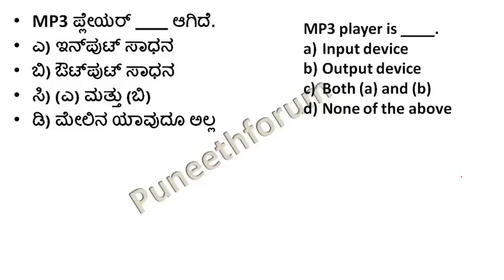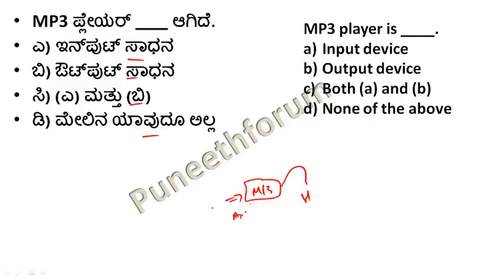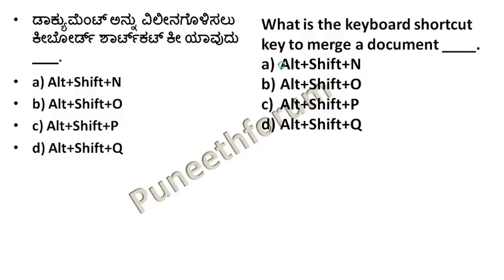Simple questions and also very important questions. MP3 player — is it an input device or output device? How do you listen to a song? You have a cassette or pen drive option, and an AUX cable option. You can use earphone or headphone. So you can use both input and output. That is the right answer.